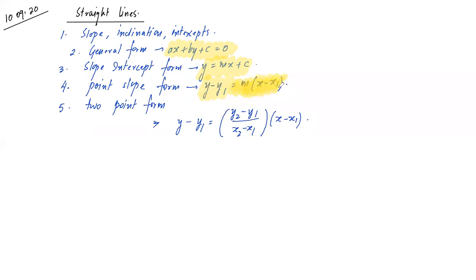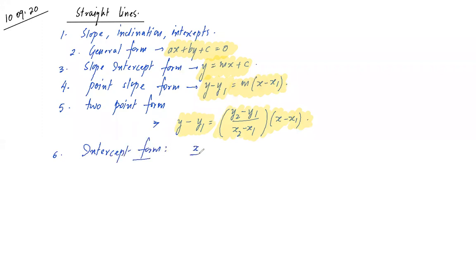So those are two more formats: y minus y₁ equals m(x minus x₁), and y minus y₁ equals (y₂ - y₁)/(x₂ - x₁) times (x minus x₁). The last format is intercept form, whose equation is x/a + y/b = 1. These five formats — general form, slope-intercept, point-slope, two-point, and intercept form — have all been covered.